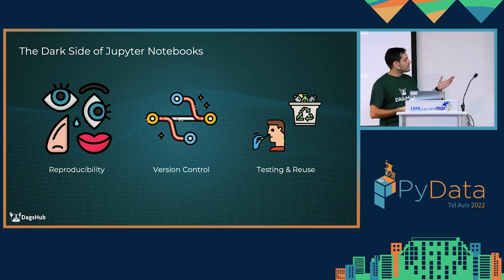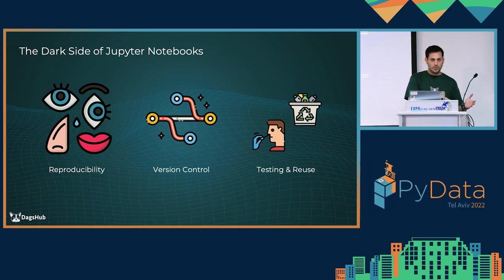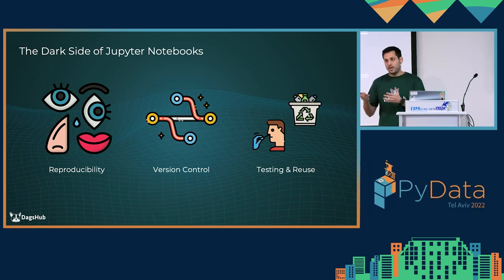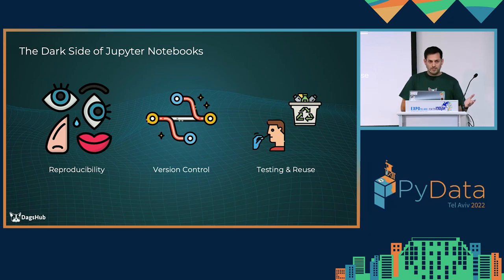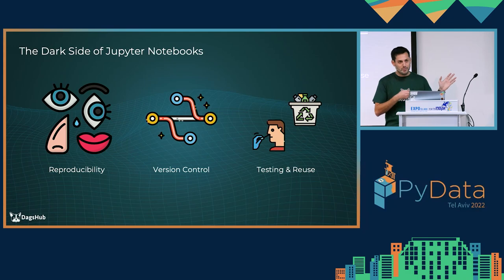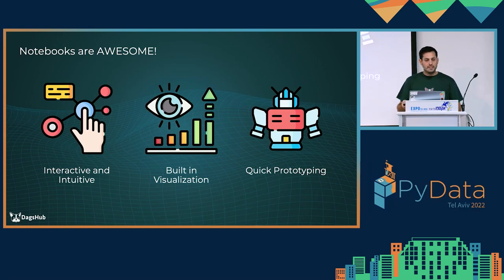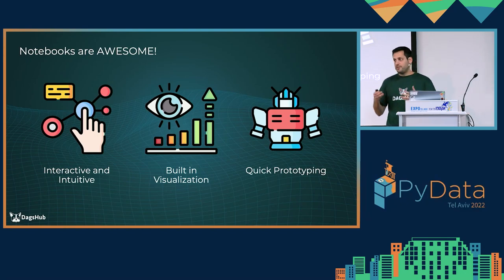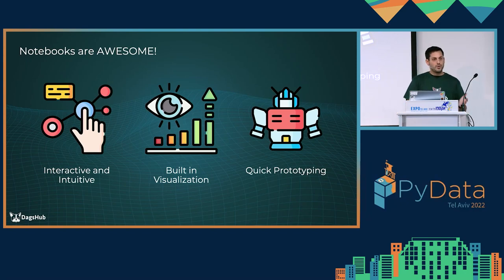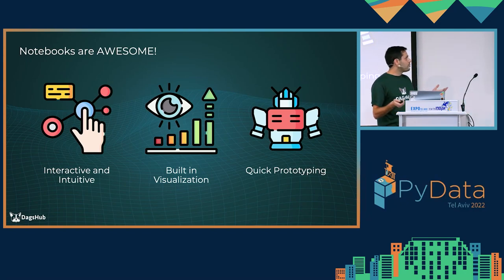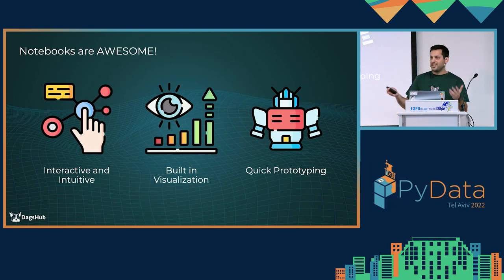Unless the code hosted in the notebook can be called outside of it, it's very hard to test and reuse in other projects. So why not just throw them out and go back to the good old-fashioned IDE? Well, Jupyter notebooks give us some superhuman abilities — they provide an interactive way to work with our code, built-in visualizations to see results next to the cell that ran them, and they're great for communicating our work to colleagues and non-technical stakeholders. Jupyter notebooks are great for quick prototyping and as a sandbox environment.